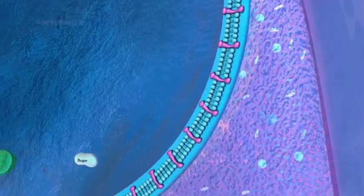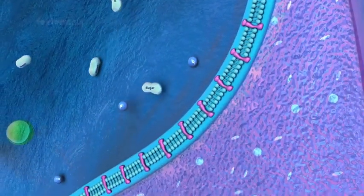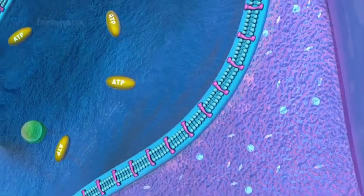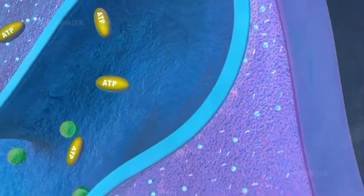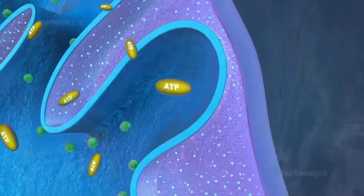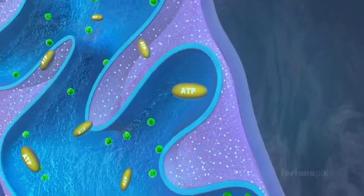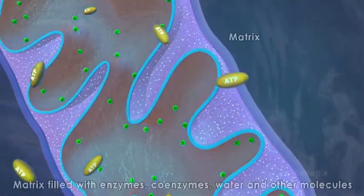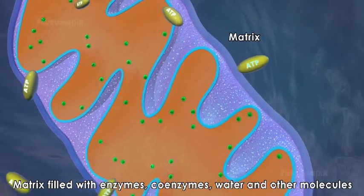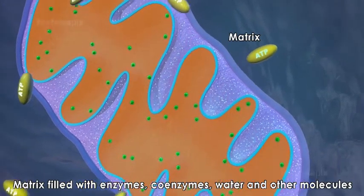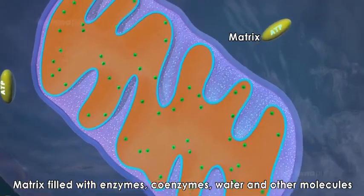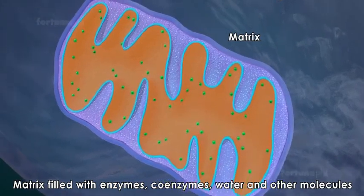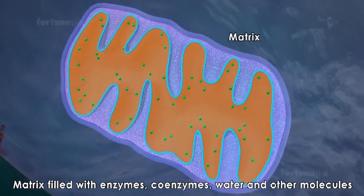On the cristae, sugar is combined with oxygen to produce ATP, the primary energy source for the cell. The space surrounding the cristae is a matrix filled with a dense solution containing enzymes, coenzymes, water, and other molecules involved in cellular respiration.